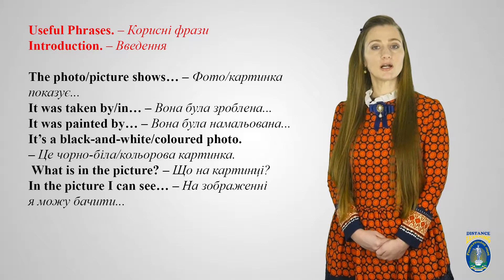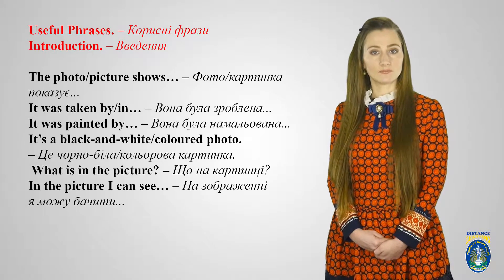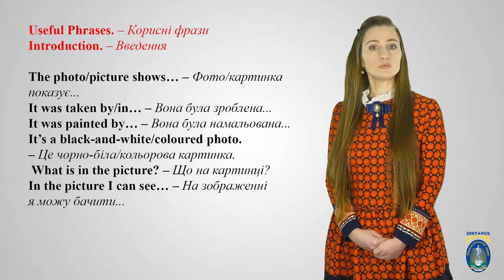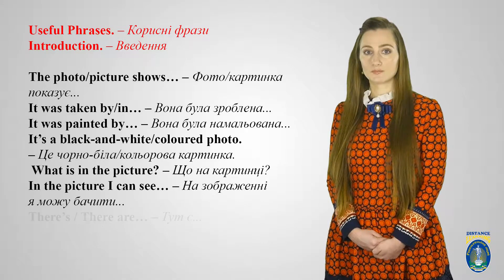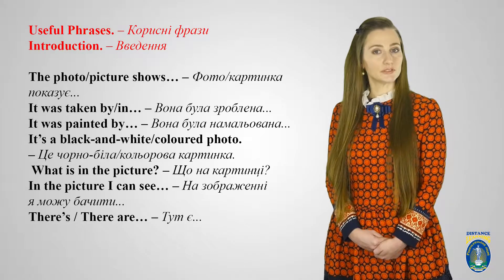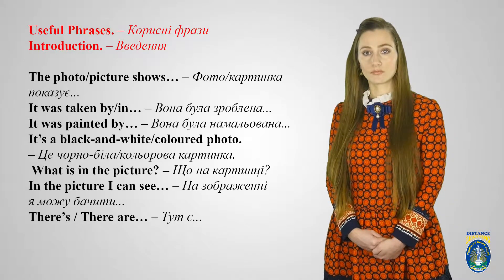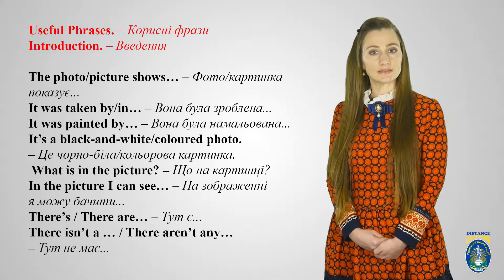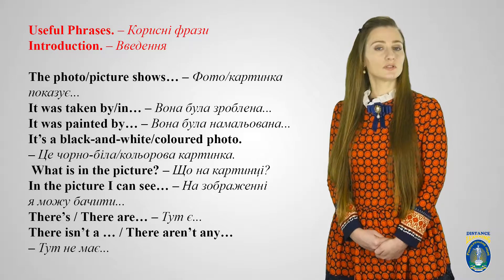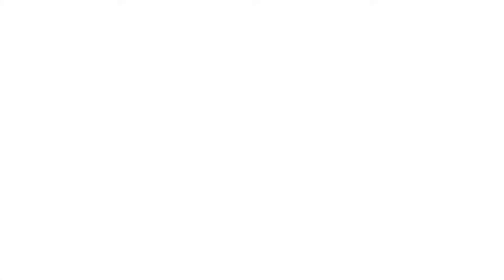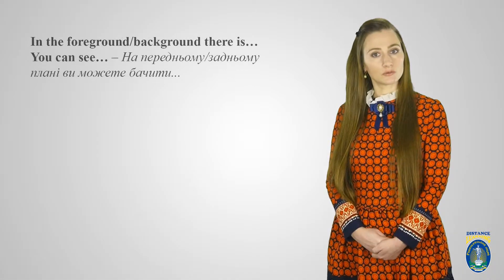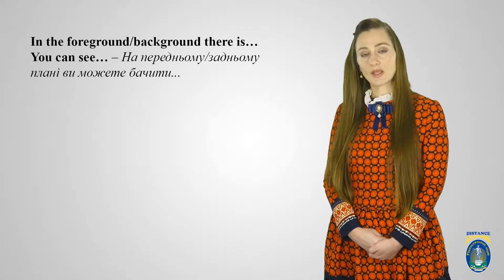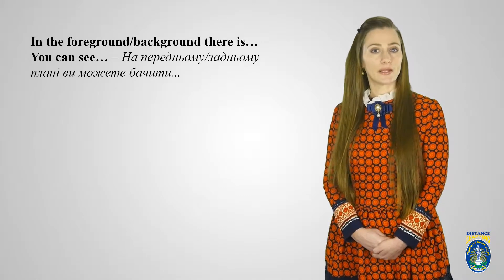In this picture I can see — на цьому зображенні я можу бачити. There is / there are — тут є. There isn't / there aren't — тут немає. In the foreground / in the background there is / you can see — на передньому / задньому плані ви можете бачити.